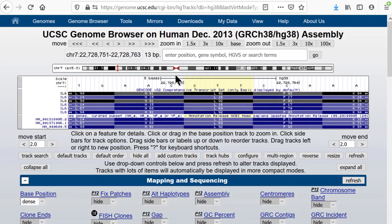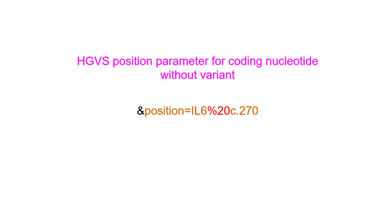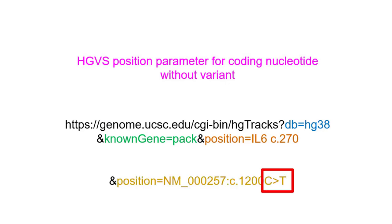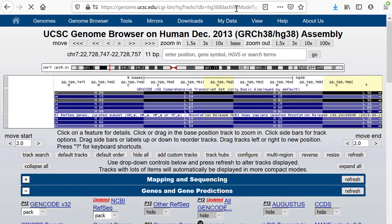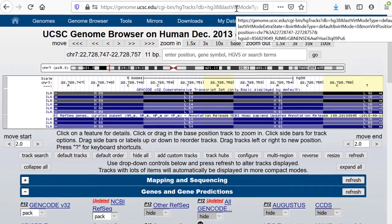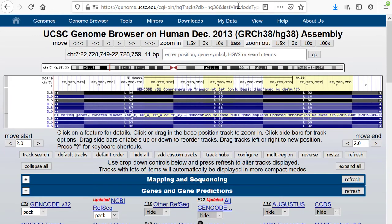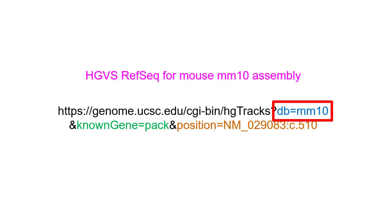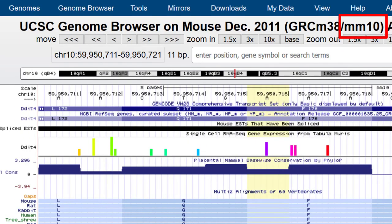We also use the canonical transcript when using the c. nomenclature to define the location in the coding DNA, such as ampersand position equals il6%20c.270. The %20 is actually optional — you can use a space or a colon in place of the space. This format does not specify a variant. HGVS also works on non-human assemblies; if you have a RefSeq identifier, it will work. For example, this one for mouse goes to the mouse assembly MM10 in the DDIT4 gene at the designated nucleotide.